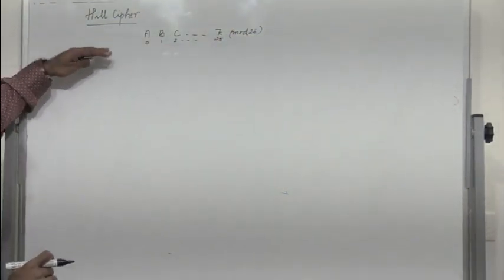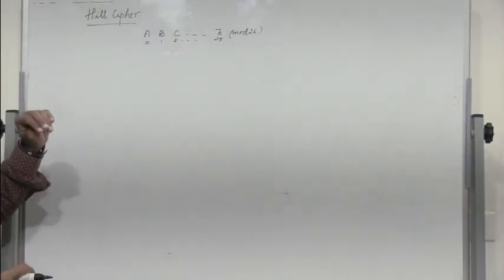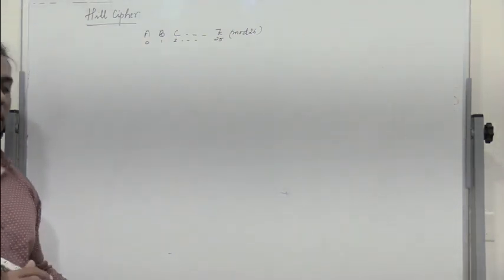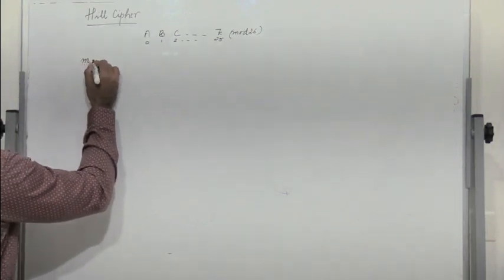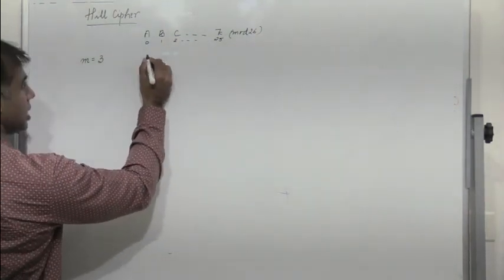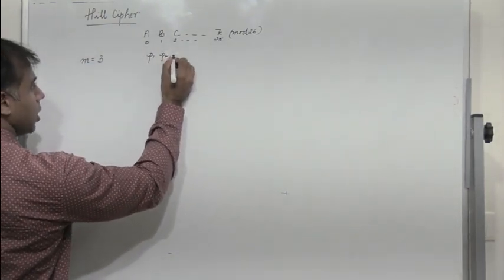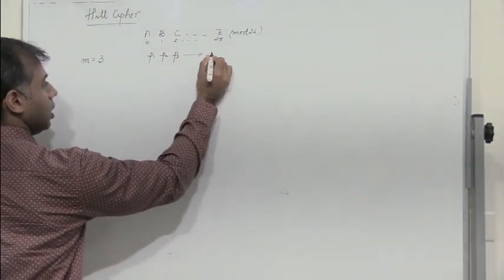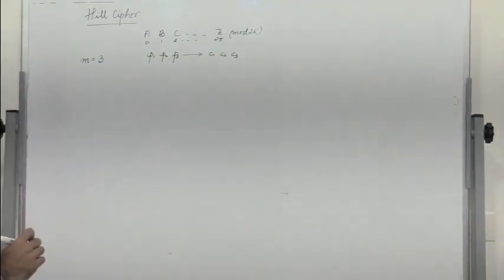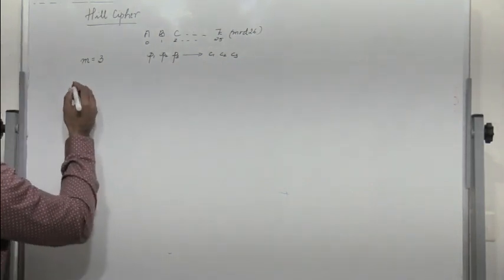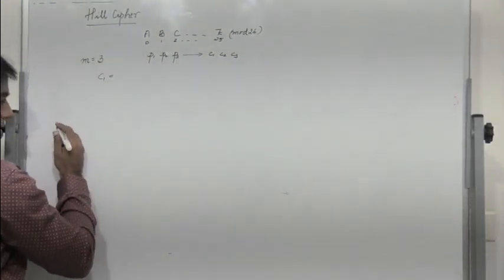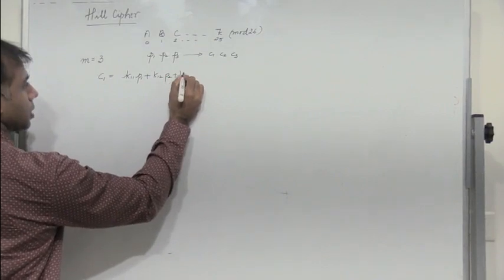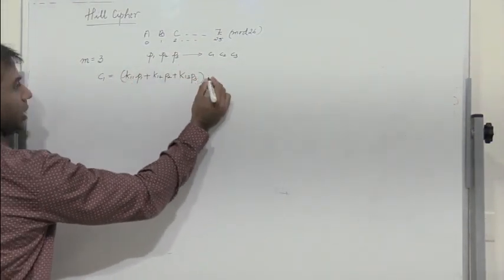In this cipher we have m linear equations substituting m plaintext letters with m ciphertext letters. For example, with m equal to 3, we consider 3 plaintext letters p1, p2, p3, substituted with 3 ciphertext letters c1, c2, c3. The equations are: C1 = k11·p1 + k12·p2 + k13·p3 (mod 26).